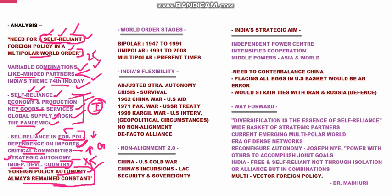We need to understand the stages of world order. The first stage is bipolar, from 1947 to 1991 when the USSR broke up. The next is unipolar, from 1991 to 2008, until a huge crisis hit the USA. The current stage is multipolar, where we engage with different countries based on different combinations according to our needs and their like-mindedness.